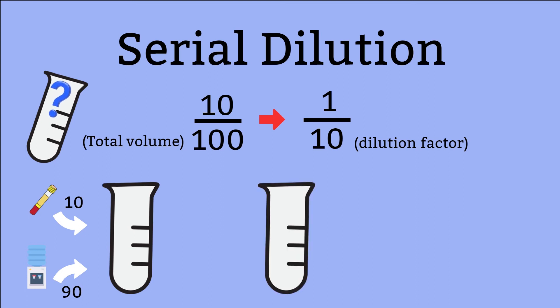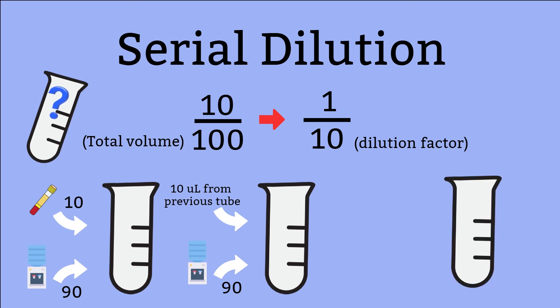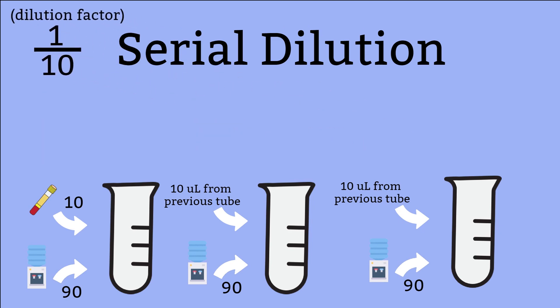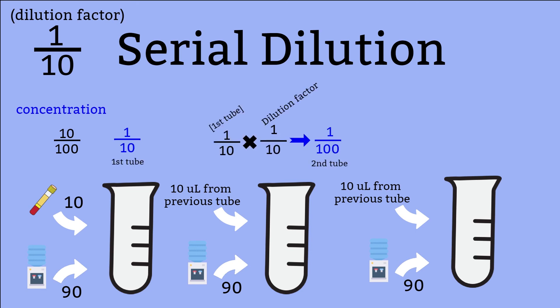Moving on to the second tube: same thing — 90 microliters of diluent and 10 microliters of the solution from the first tube. Moving on to tube number three: exactly the same — 90 microliters of diluent and 10 microliters of solution from the previous tube. The dilution factor in this example is 10. So the concentrations are: 1 to 10 for the first tube, 1 to 100 for the second tube, and 1 to 1000 for the third tube. Your final tube has a concentration of 1 to 1000.